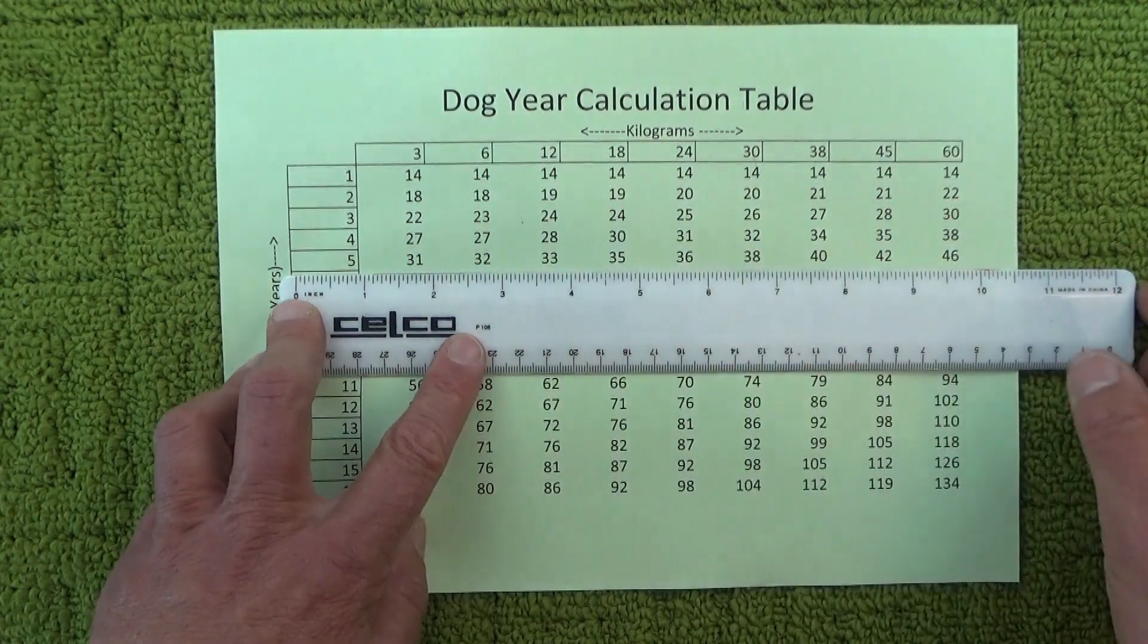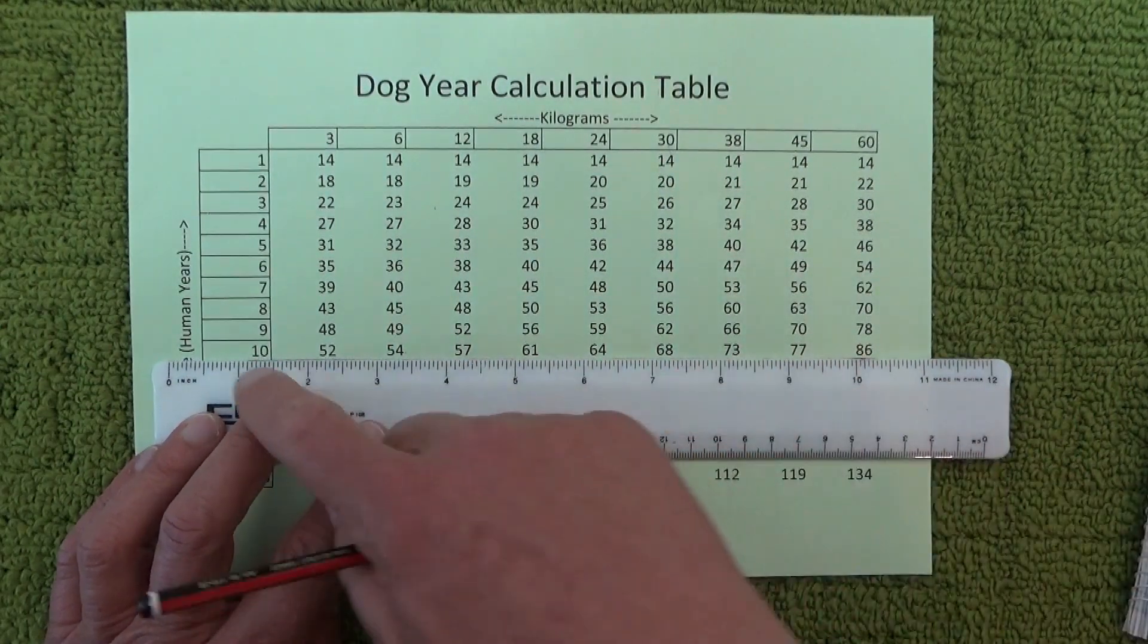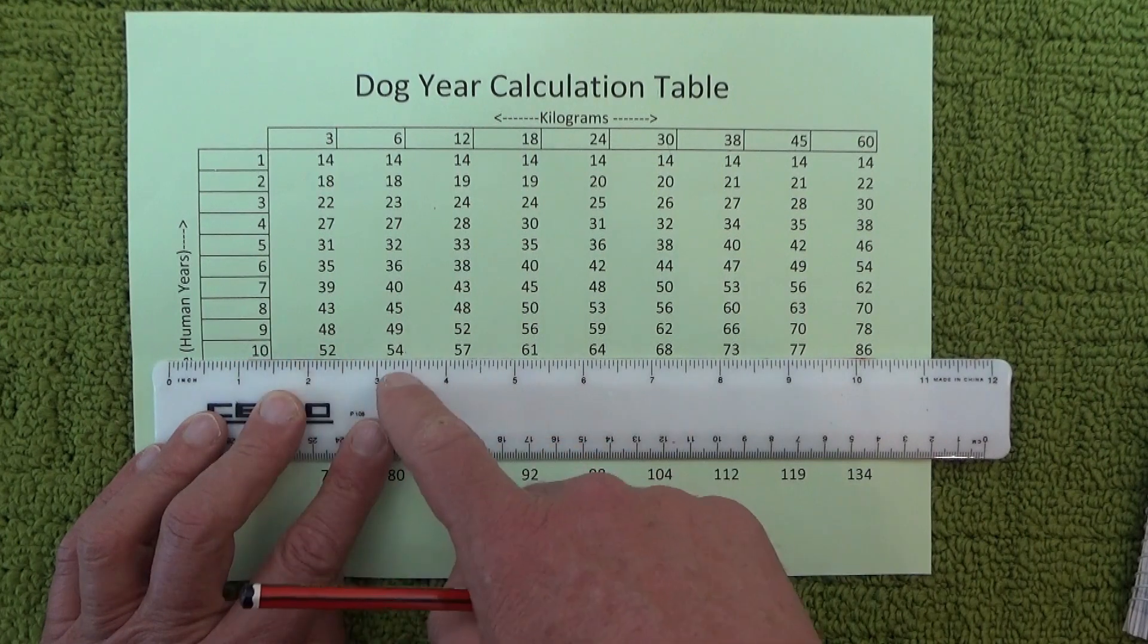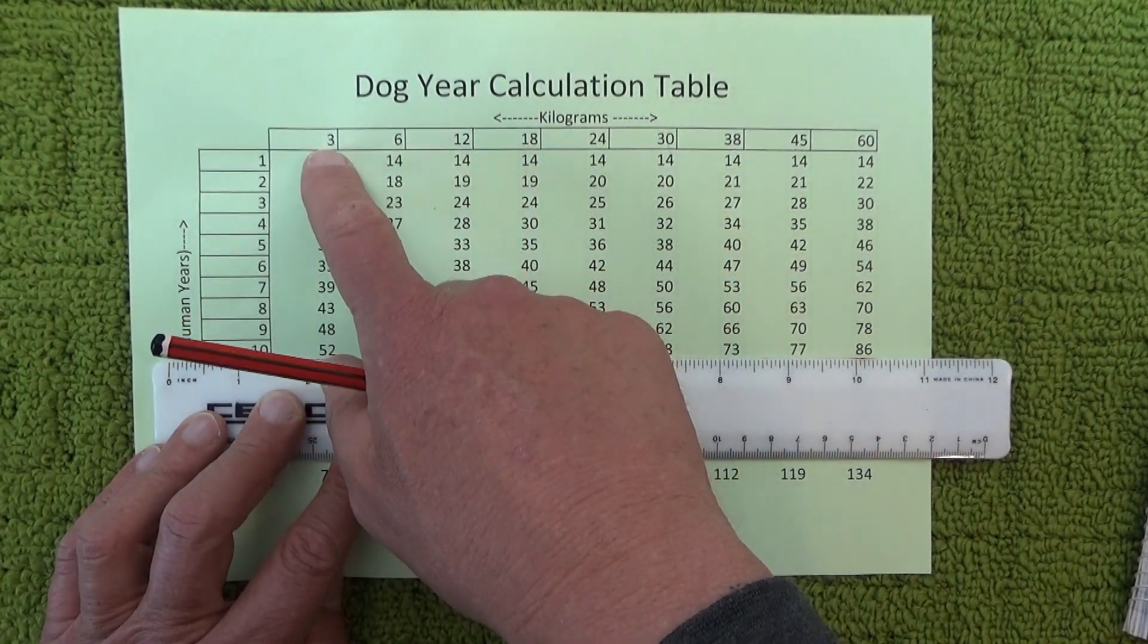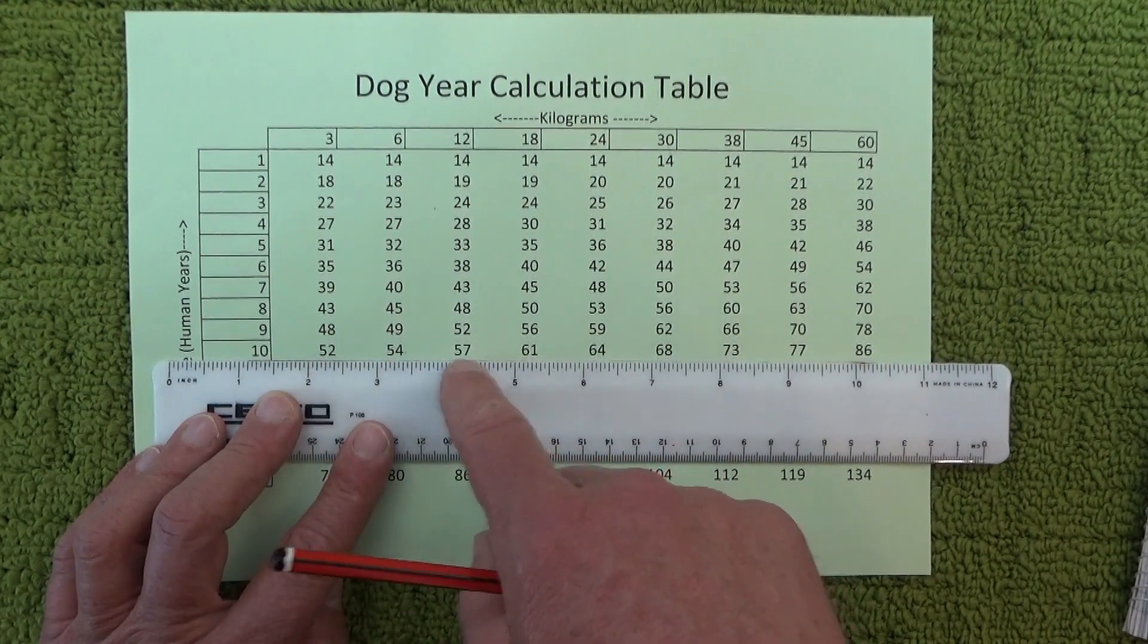What I think is interesting from this table is a dog that's 10 years old and it's only a small dog that weighs 3, 6, or 12 kilos—that's the equivalent of being a human in their 50s.